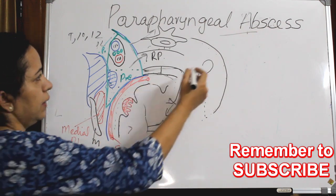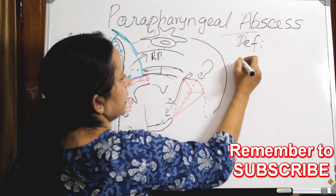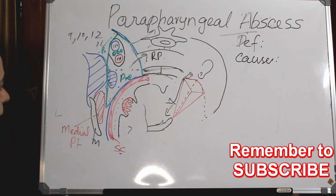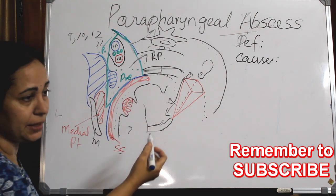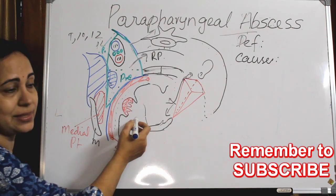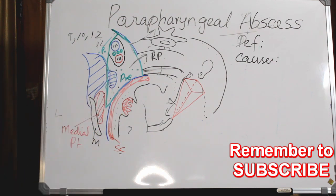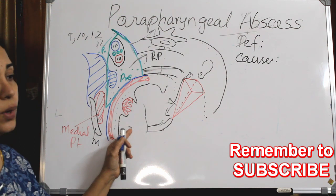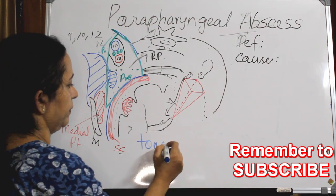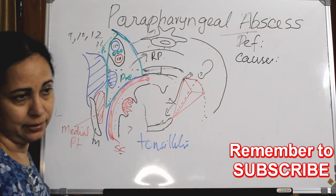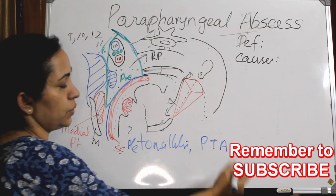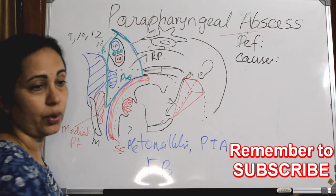The parapharyngeal abscess can happen in any age group. The most common cause relates to the tonsil, which is an immediate relation of the parapharyngeal space. Causes include acute tonsillitis, peritonsillitis, peritonsillar abscess (quinsy), and penetrating foreign bodies inside the pharynx. Thinking about the anatomical relations makes the causes easy to remember.